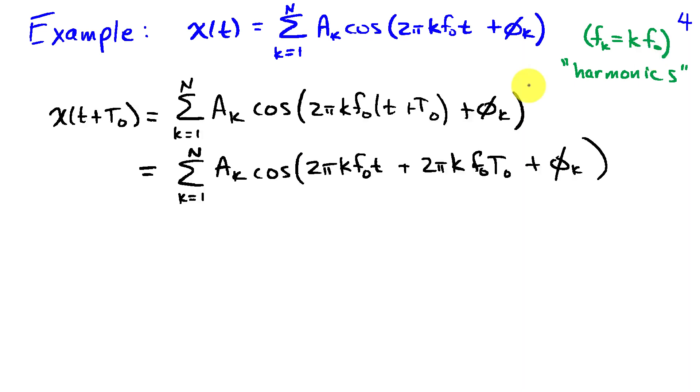We'll apply our mathematical definition of periodicity and replace t and x of t by t plus capital T naught to obtain again the sum a k cosine 2 pi k f naught times the quantity t plus t naught plus phi k.